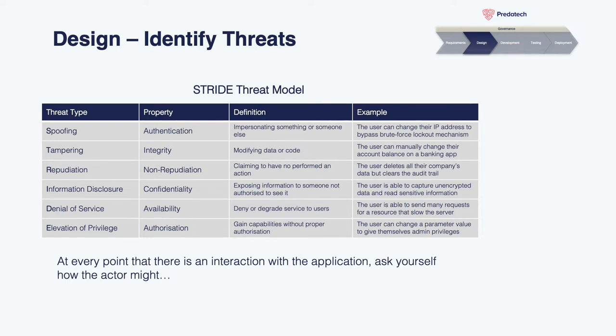At every point where there is interaction with the application — by an internal or external user or third party — ask how a threat actor might use spoofing, tampering, or any of the other STRIDE categories to cause harm to the application or its users. Think of as many scenarios as possible at each point of functionality in your data flow diagram. Go through methodically — it's impossible to think of every single threat at this stage, but the more items you can identify, the better foundation you'll have to work on.